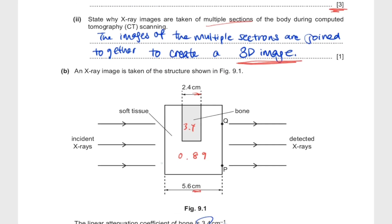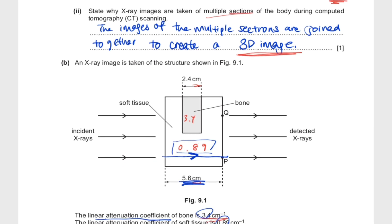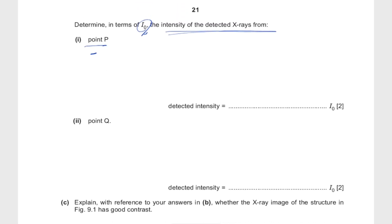They tell us to determine in terms of I₀ the intensity of the detected x-rays from point P. So remember that point P is this one length where it's entirely soft tissue, 5.6 centimeters of it, without any bone inside. We can write down our equation, I equals I₀ times e to the power of negative μx. So this can be I₀ times e to the power of 0.89 times 5.6. And this will give us 6.85 times 10 to the power of negative 3 I₀. They tell us to determine it in terms of I₀, so you can just leave that there.